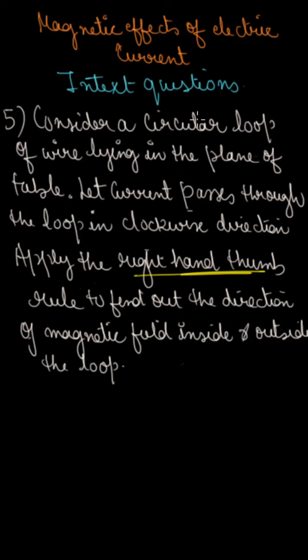The question says that a circular loop is placed on the table — so this is a circular loop, wire is placed on the table. Let current pass through this loop in the clockwise direction. Clockwise means the current flows in that direction around the loop.